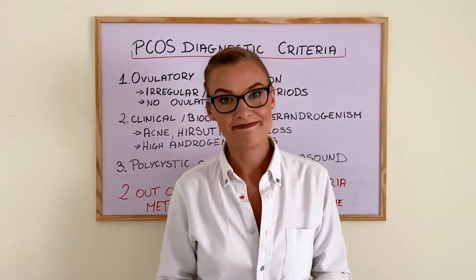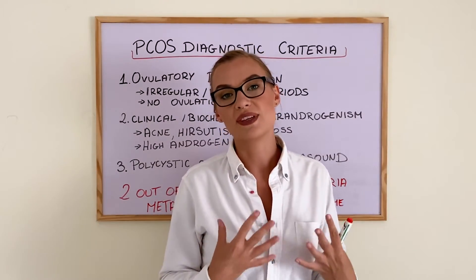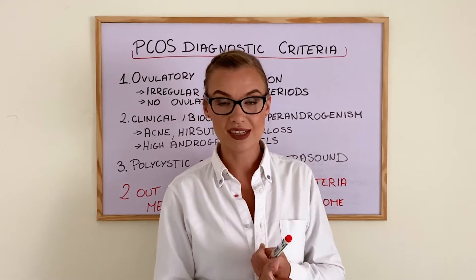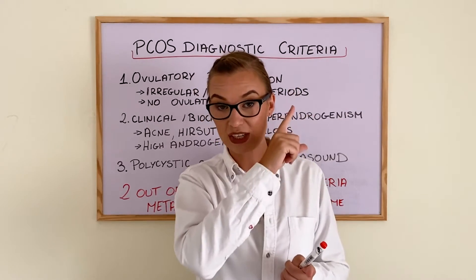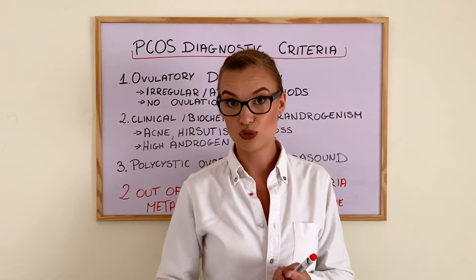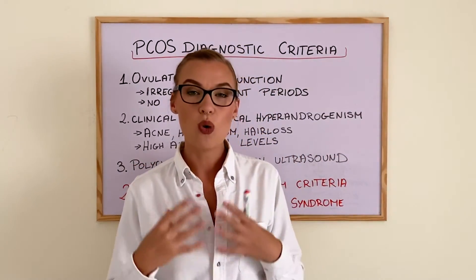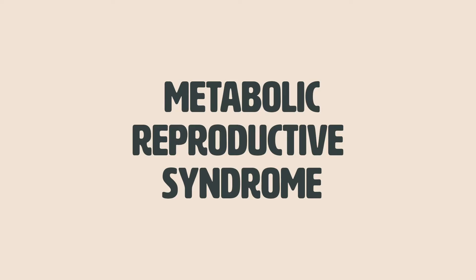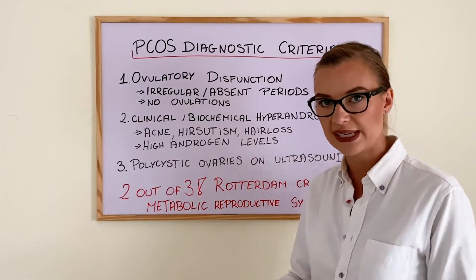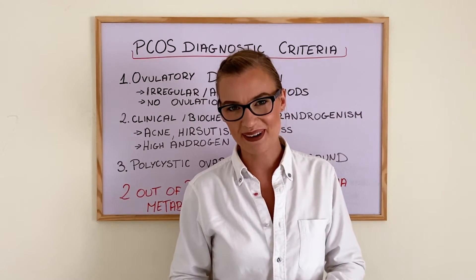You don't actually need to have polycystic ovaries to be diagnosed with polycystic ovarian syndrome — I know, it's strange. Scientists are actually thinking about changing the name because not all women have polycystic ovaries. You might have very common insulin resistance, hyperandrogenism, and polycystic ovaries — but you don't have to. Scientists are debating whether a better name would be metabolic reproductive syndrome, because that encompasses everything that happens in about 70% of women with insulin resistance and how their cells work. In my opinion, metabolic reproductive syndrome is a much better name.